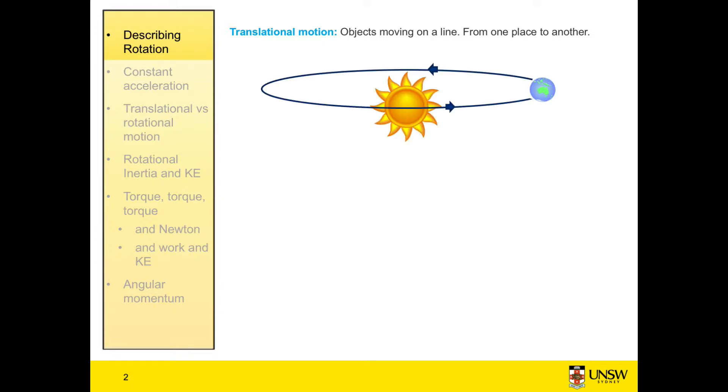For example, we have our Earth circling the Sun, which is our standard case for uniform circular motion. The translational motion of the Earth about the Sun, moving through space around the Sun, is what gives us our seasons.